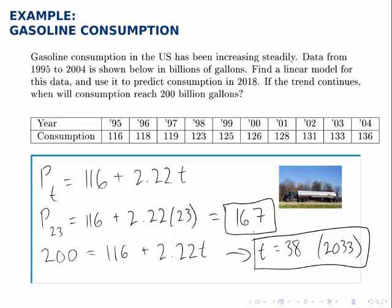So we've answered both questions. These are the two types of questions we're often asked with a linear model like this: given a value for time, can we predict the consumption, or given a value for the consumption, can we predict at what point in time it will hit that mark. Either given t find p, or given p find t. We've done an example of each now.